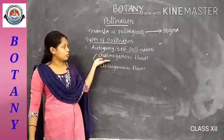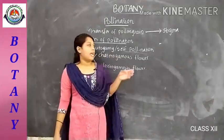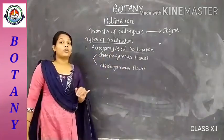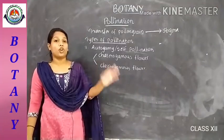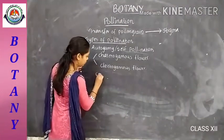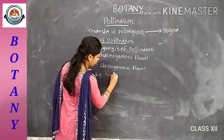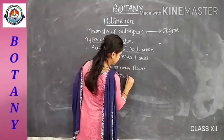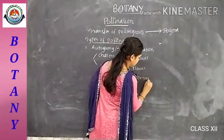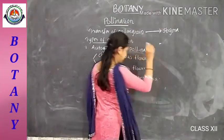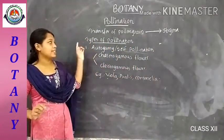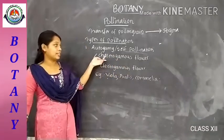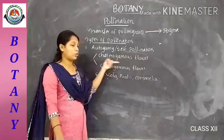Both cleistogamous and chasmogamous flowers carry out autogamy. Examples of flowers that carry out autogamy are Viola, Oxalis, and Commelina. In chasmogamous flowers, the anthers and stigma are exposed, while in cleistogamous flowers, the flower is partially opened.